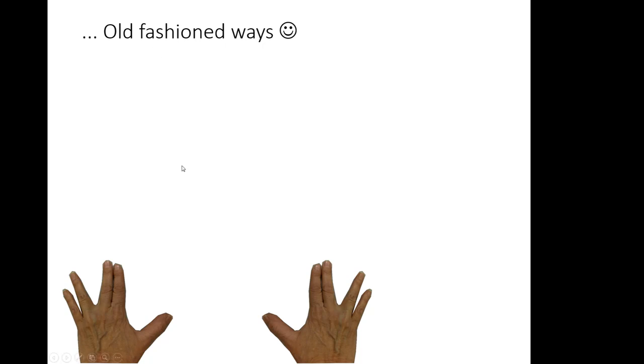So five times three is five, ten, fifteen. Five times five is five, ten, fifteen, twenty, twenty-five.